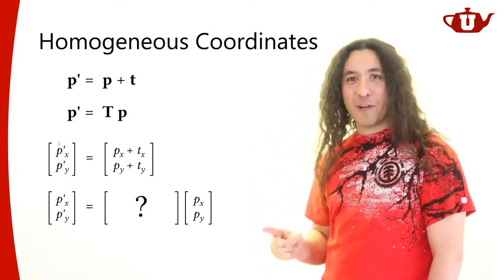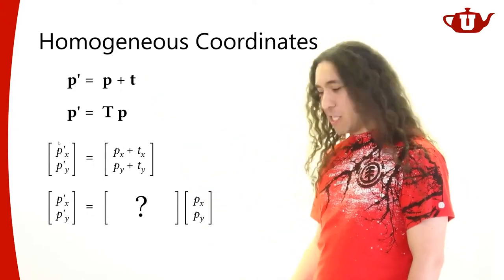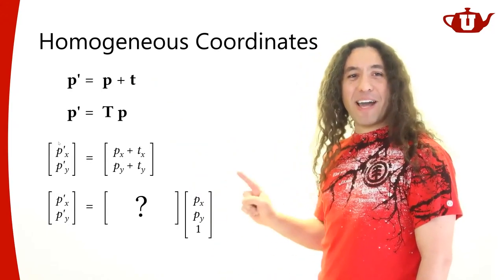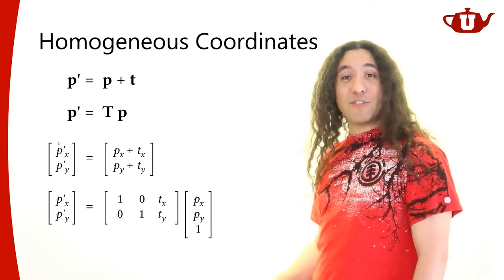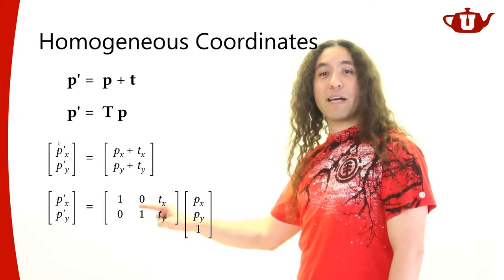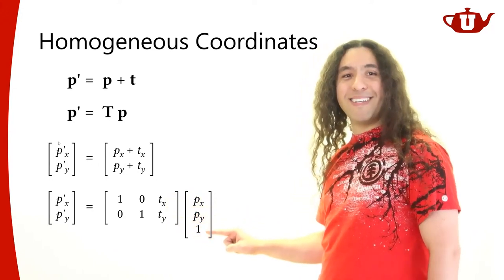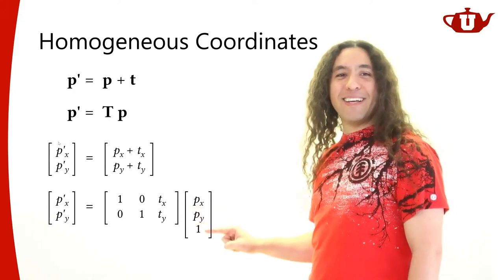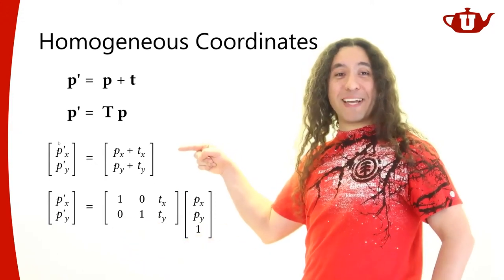So I'm going to cheat. To make addition look like matrix multiplication, I'm going to add one extra coordinate to my vector. Now with this extra coordinate set to 1, I can write a matrix where the top-left 2×2 block is identity, and the right column holds the translation values tx and ty, which get multiplied by the 1 and added to the vector components.